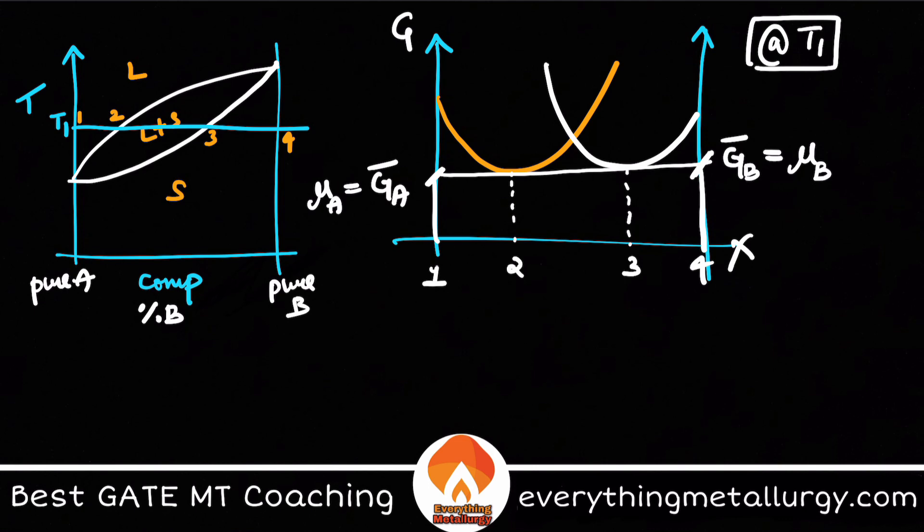As we change the temperature, you get usually different points. So here how many points we have generated? We have got two points where you can see on the liquidus and the solidus. Similarly, let's say I am increasing the temperature somewhere here. So here it is completely liquid only.